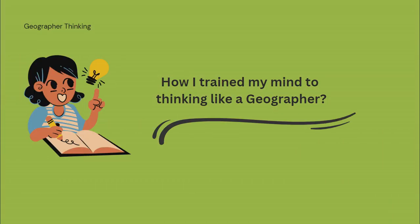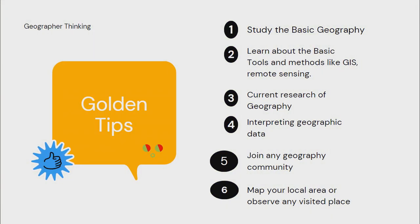The question is: how do you train your mind to think like a geographer? Here are golden tips to improve your thinking in geography. Study basic geography, learn about basic tools and methods like GIS and remote sensing, follow current research in geography, practice interpreting geographic data, join a geographic community, and map your local area or observe any place you visit.